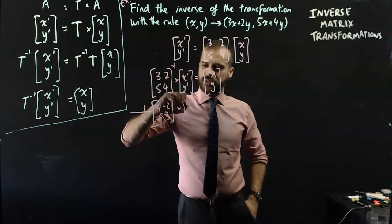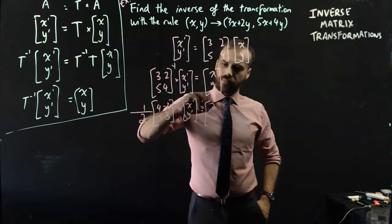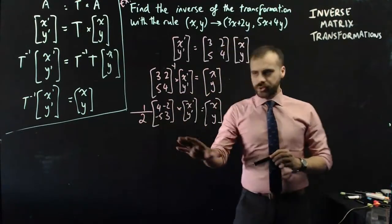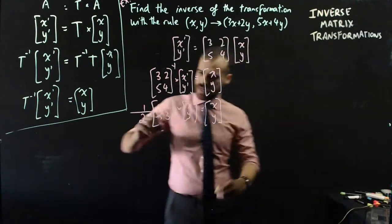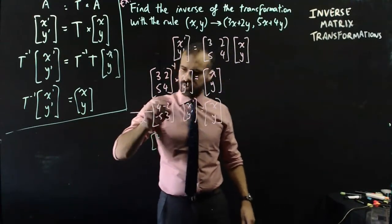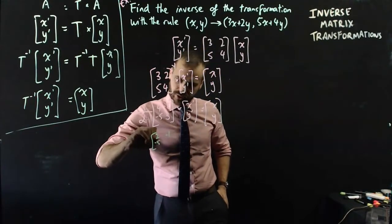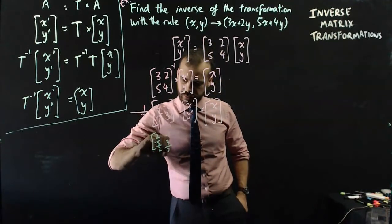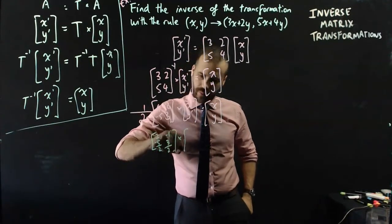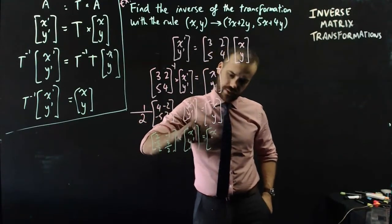And I'll just write the rest of the formula. So we're not too far off here. We probably just need to take that half and put that into that matrix. So 4 times a half is 2. Negative 2 divided by 2 is negative 1. Negative 5 over 2, and 3 over 2. x dash y dash equals x y.